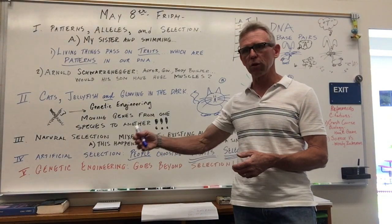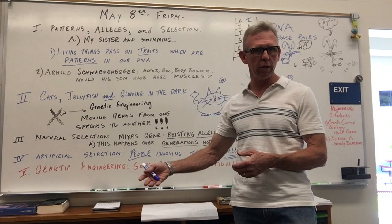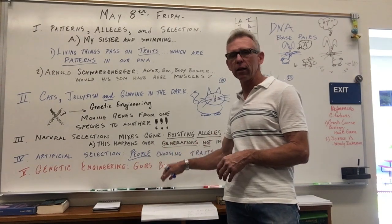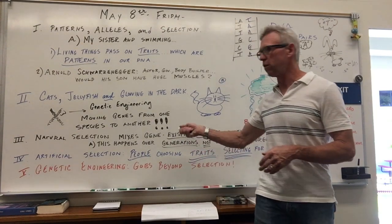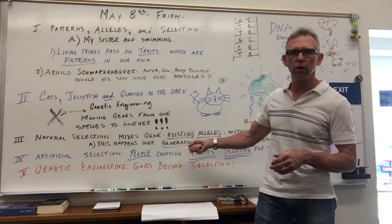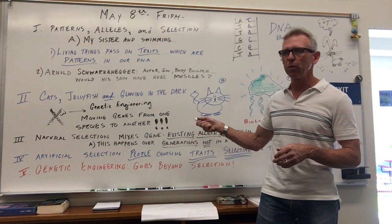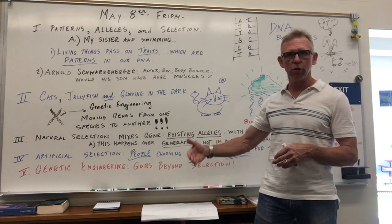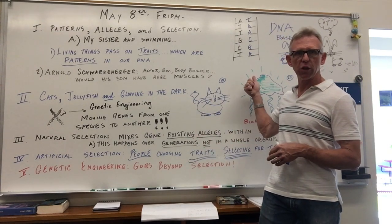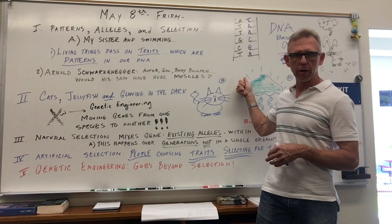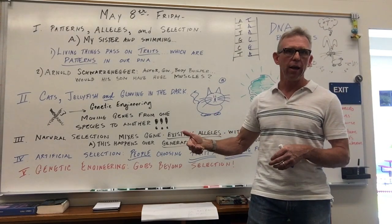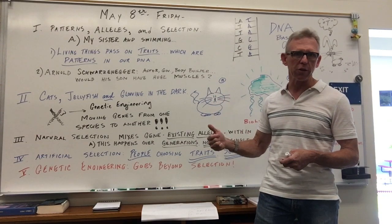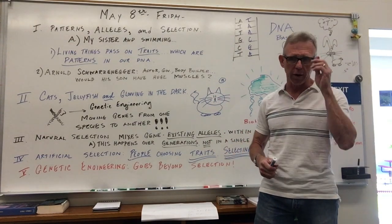They selected which dogs would breed to go for the characteristics they want. Were they guaranteed to get it? No. They can only work with the existing genes, the existing alleles. But the important thing is that what they were trying to do is pass on a particular pattern to the next generation, and by selecting which ones breed together, you have a better chance of getting the characteristics you're going for.